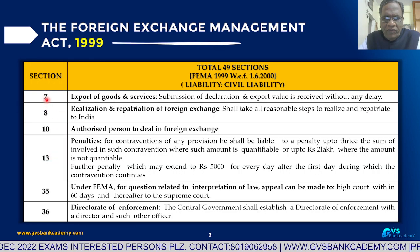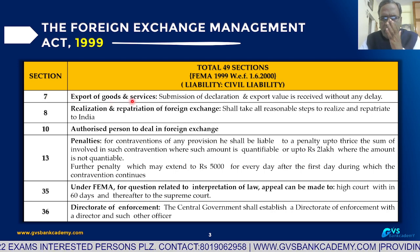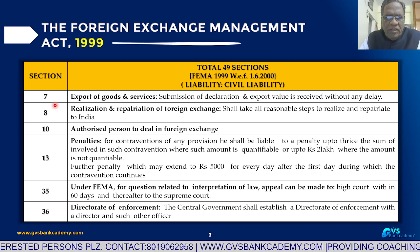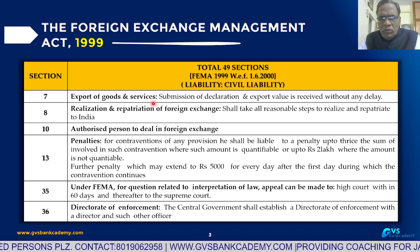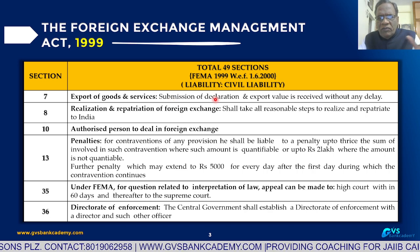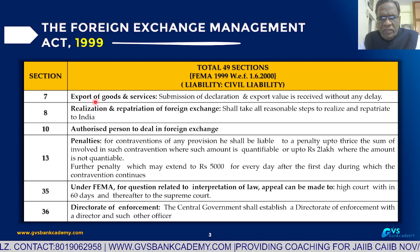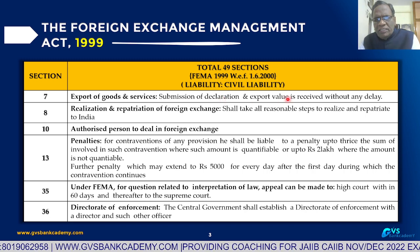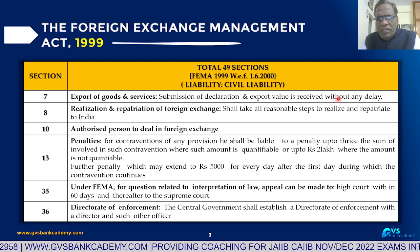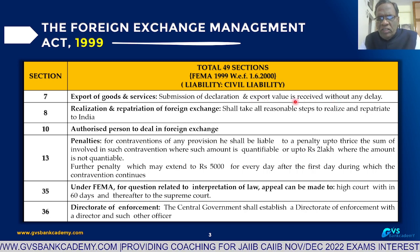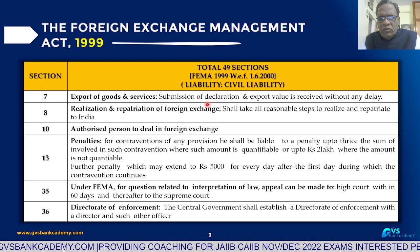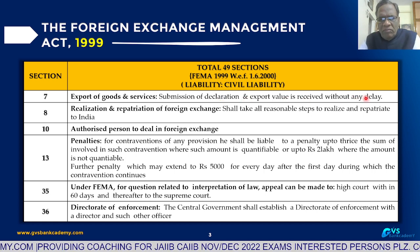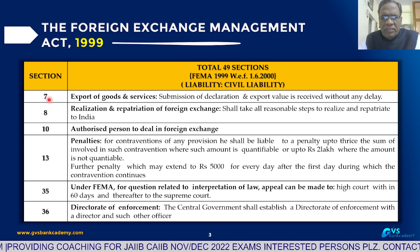Section 7 of FEMA deals with Exports of Goods and Services. This section is directly asked in examinations. After completion of export shipment, the exporter has to submit the Exchange Declaration Form. The exporter must give a certificate that the export value has been received without any delay as per specified time norms.